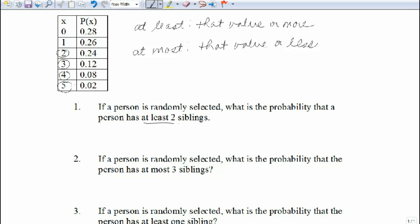That word or means that we're going to be using the addition rule and we're going to be adding the probabilities. So we're going to take the probability of having two plus the probability of three plus the probability of four plus the probability of five.